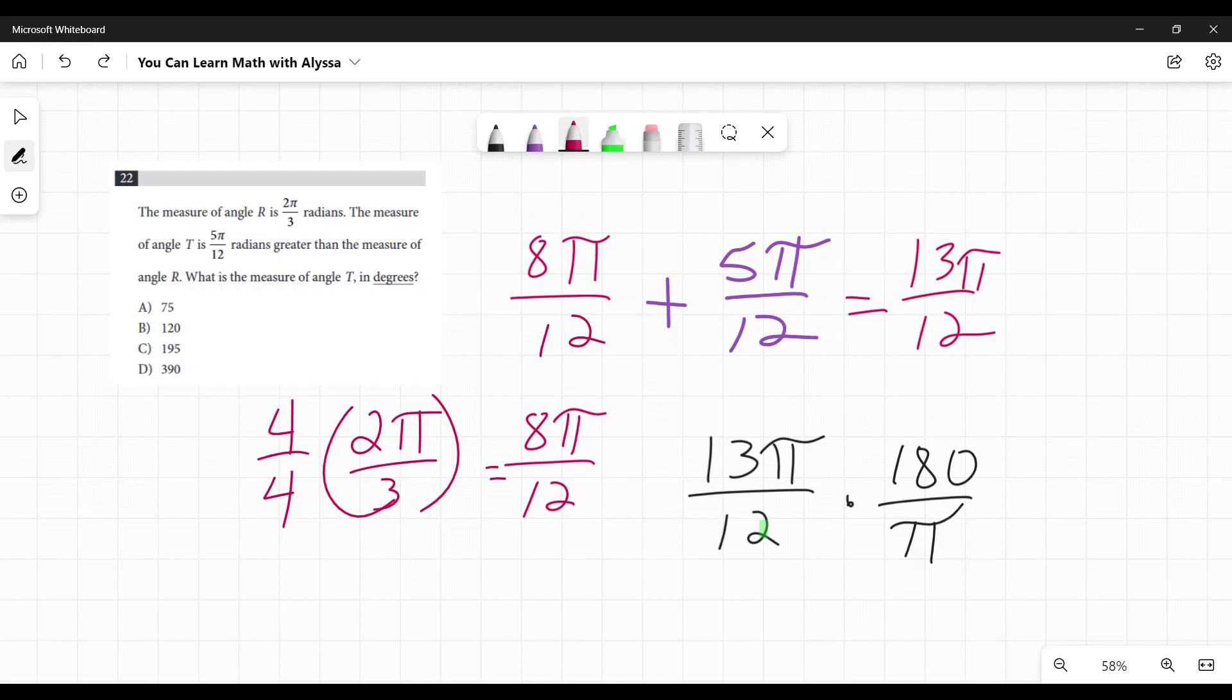Canceling here is going to be your friend. Pies cancel out. And 12 does go into 180. So 12 goes into 12 one time, and 12 goes into 180 15 times. And so then we can just multiply because the pies are gone. We just have 13 times 15 on top. And that's 195 degrees, which is C, my answer.